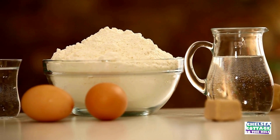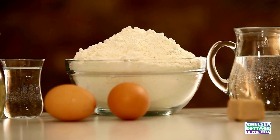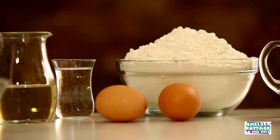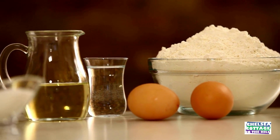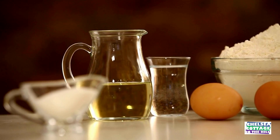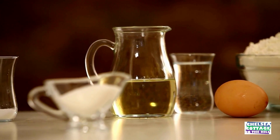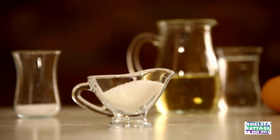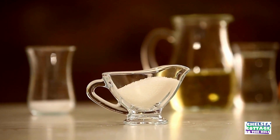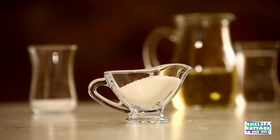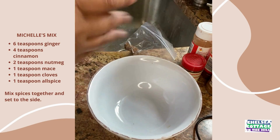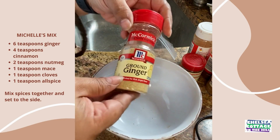To start with, we'll make what I call Michelle's Mix — the spice base for both the cake and the frosting. Ginger is one of the main ingredients, and because ginger and molasses are a natural pairing, there is an abundance of ginger in Michelle's Mix.